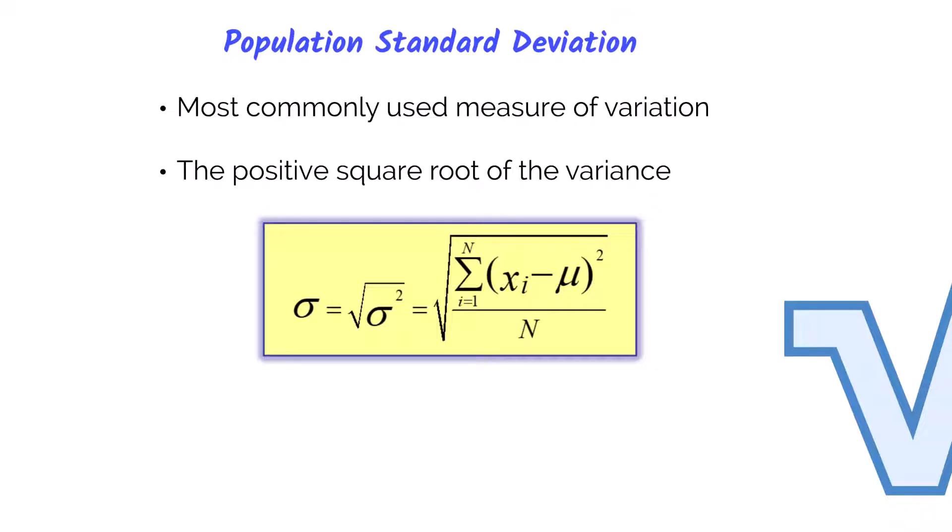To find the standard deviation, we must take the positive square root of the variance. You can see the variance formula here underneath the square root sign.